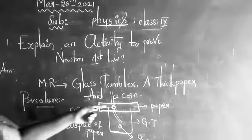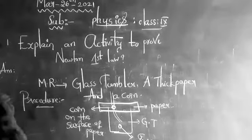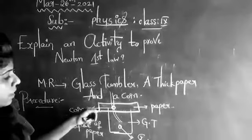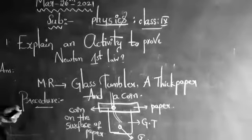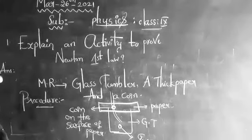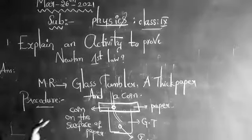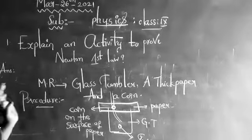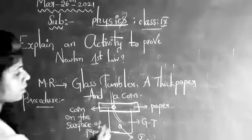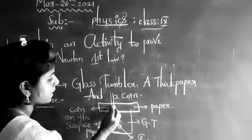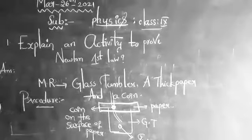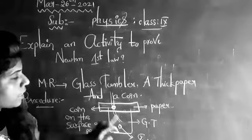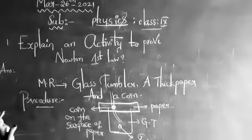Similarly, repeat the same experiment without dragging the paper. Now observe what changes you can notice here. The coin remains at a resting position. It never falls inside the tumbler.